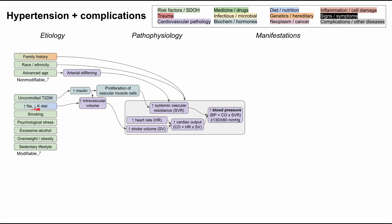A diet high in sodium and low in potassium also increases intravascular volume. In the kidneys, water follows sodium — so if you have a lot of sodium in your body, it takes time for the kidneys to clear it, and the associated water stays in your body during that time. This increases intravascular volume, raises stroke volume, and can downstream lead to high blood pressure.